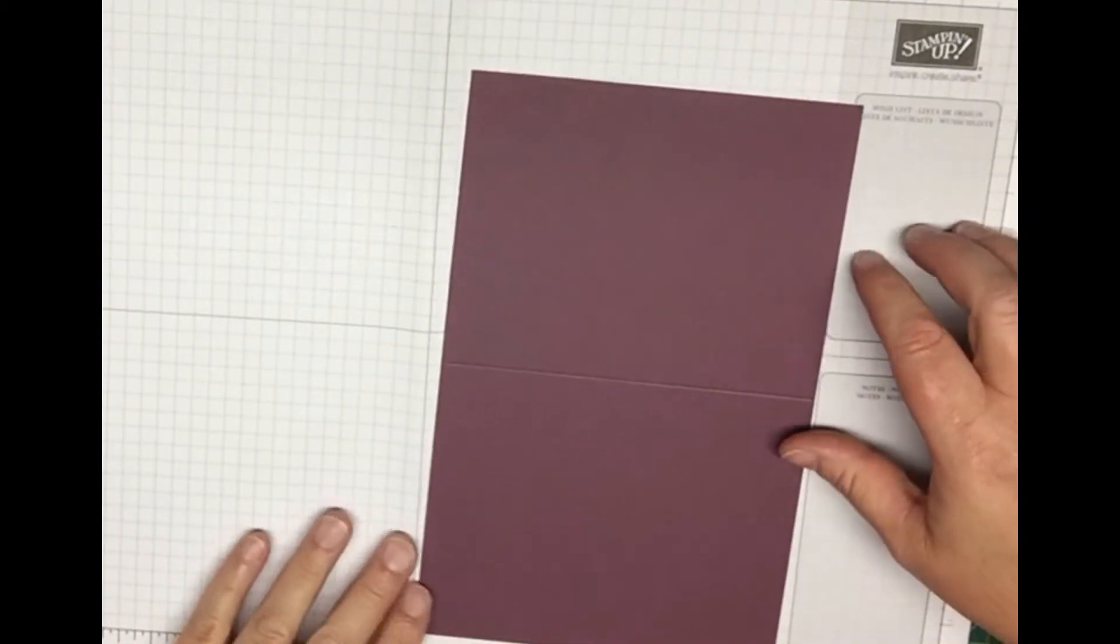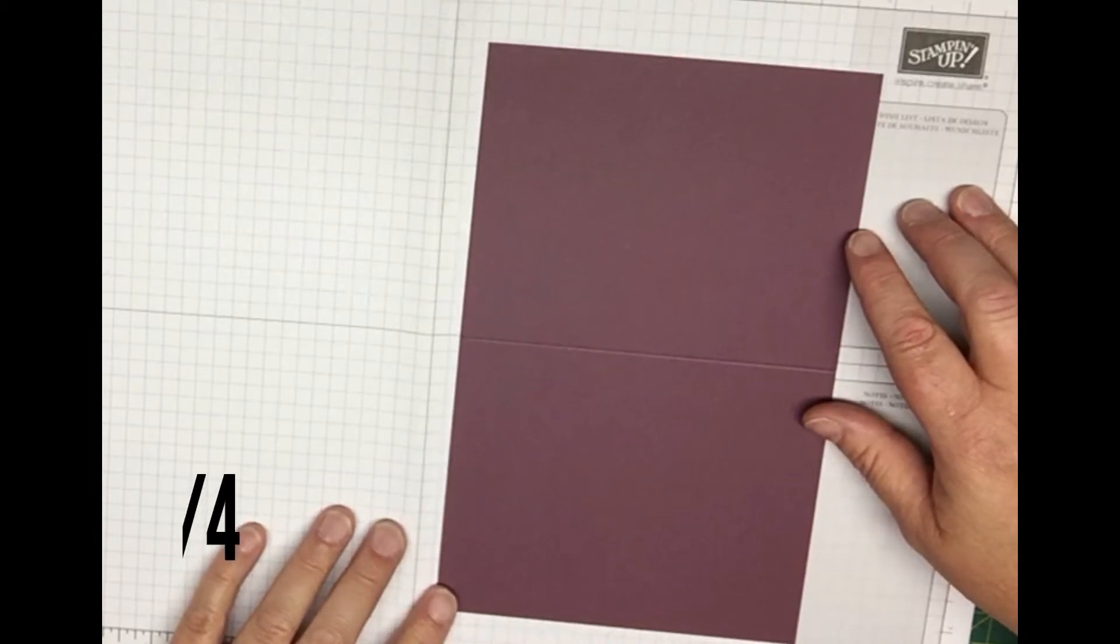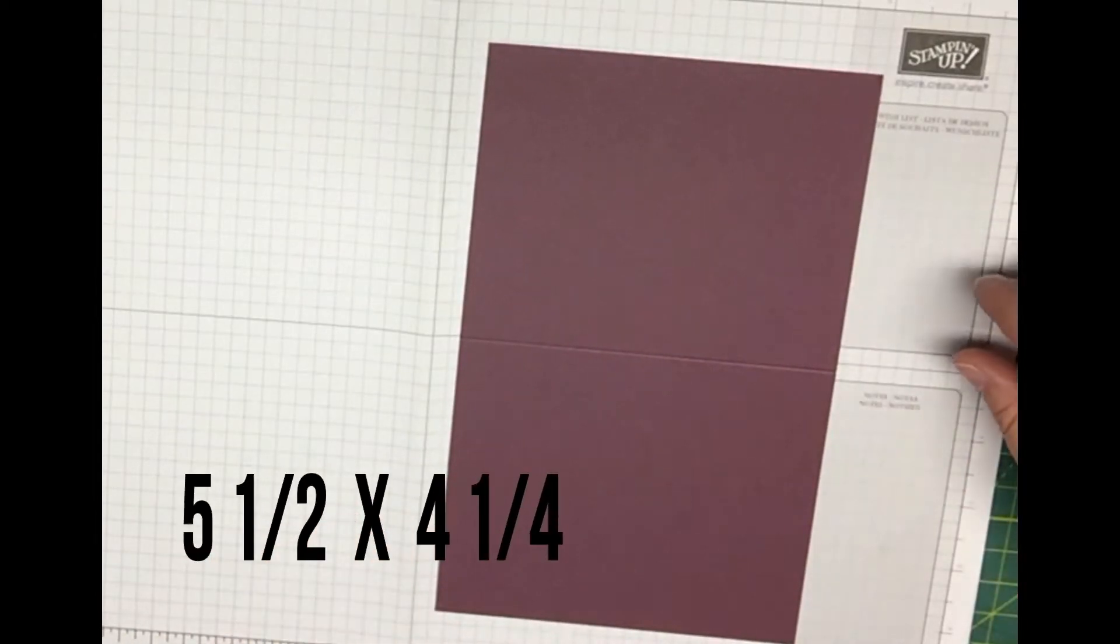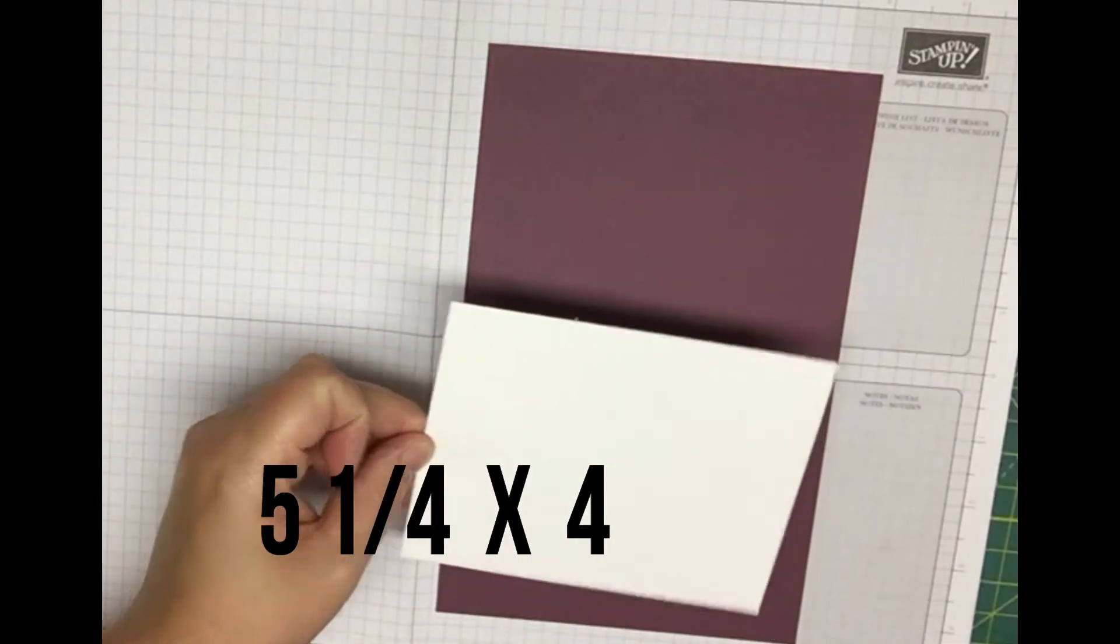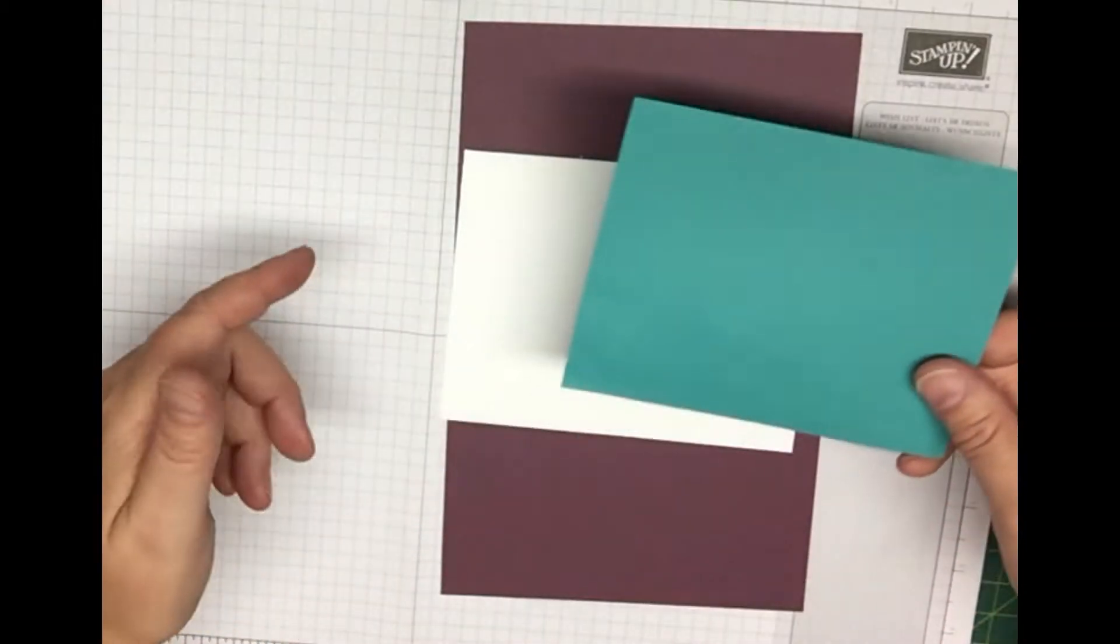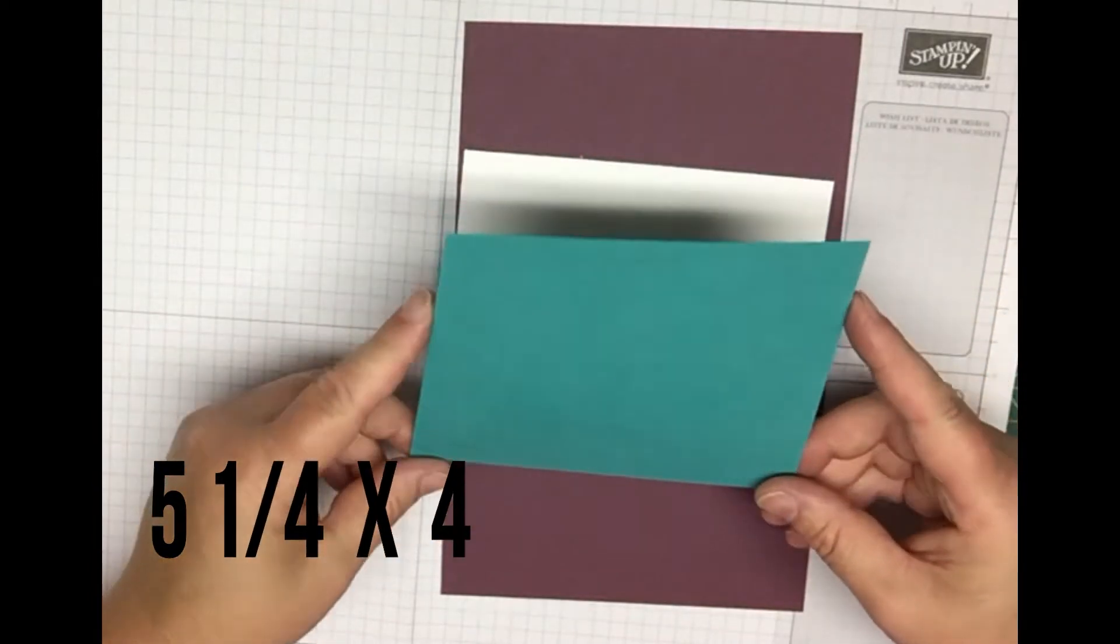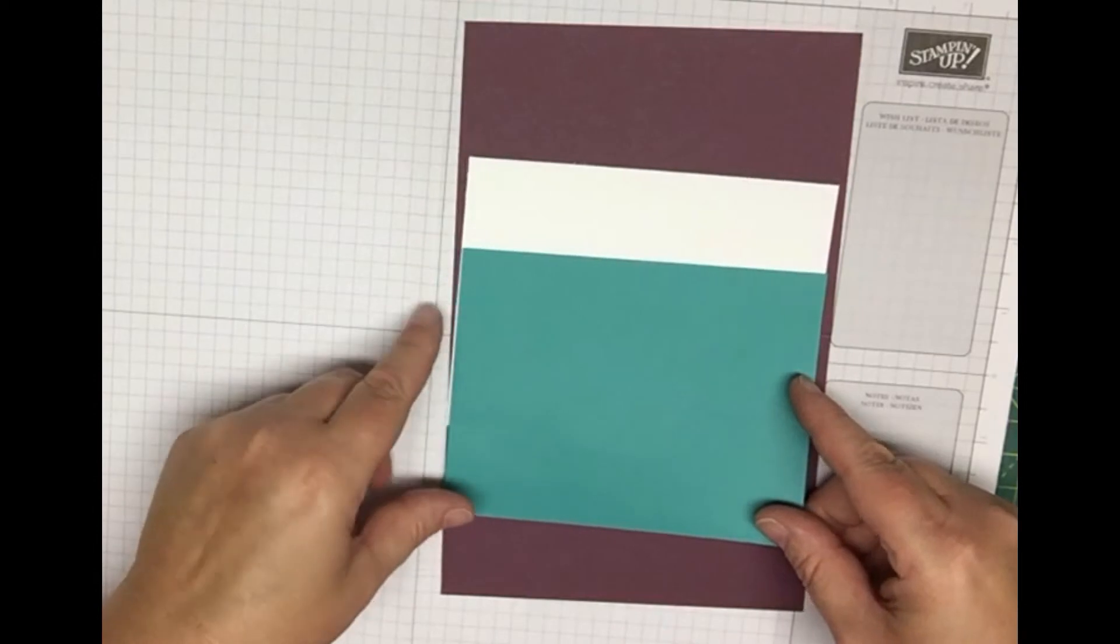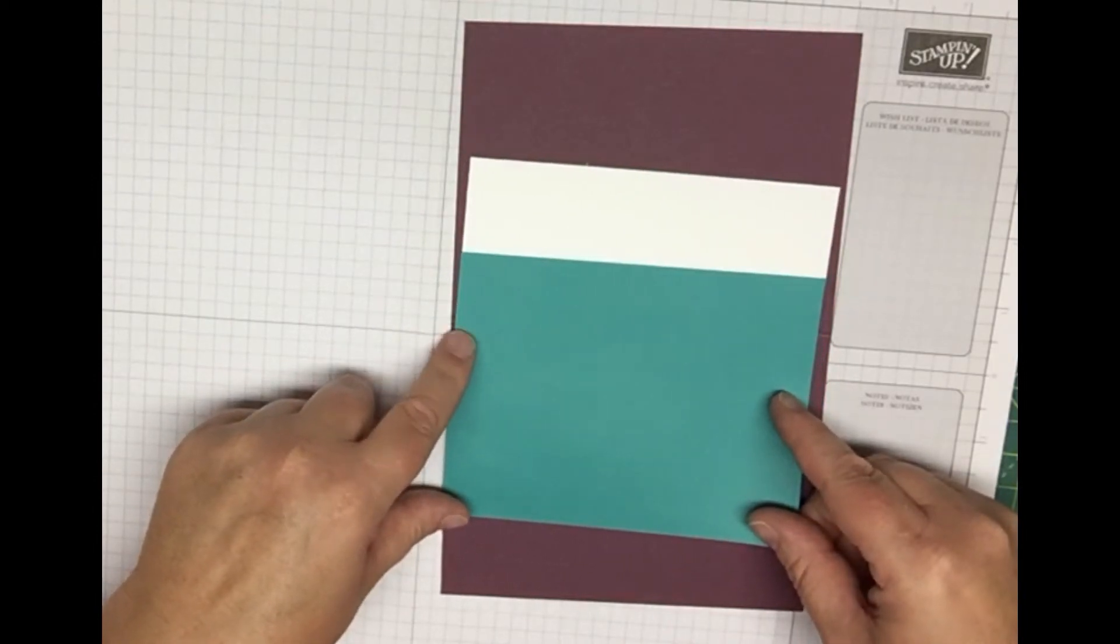The materials I used was Fresh Fig for your card base. It's an A2 size card so it's five and a half by four and a quarter. You're also going to need a piece of Whisper White which is cut at five and a quarter by four, and then a piece of scrap paper. This one here is cut at five and a quarter by four. You can use any kind you want. I chose a colored one because I'm going to be laying this on top of the white so I just want to make sure I can see exactly where it's going to lay.